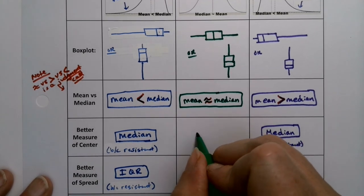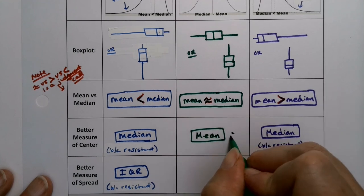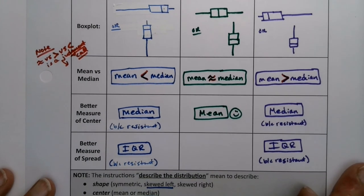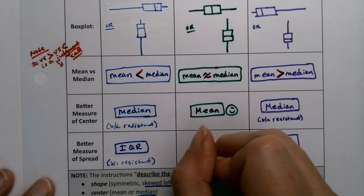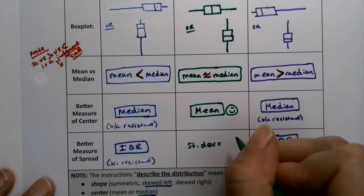If it is symmetric, then we get to use the mean, which is our favorite. We like to use the mean, so the mean makes us happy. And if we use the mean, then we get to use the standard deviation, which is the measure of spread.